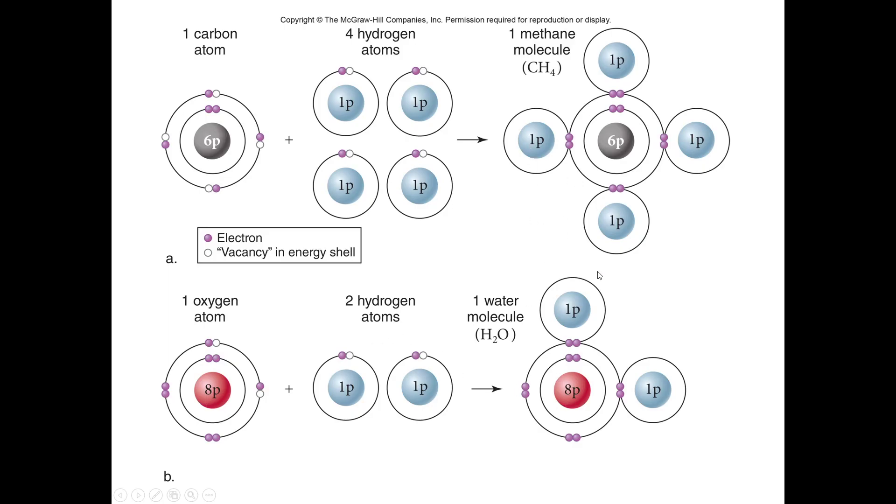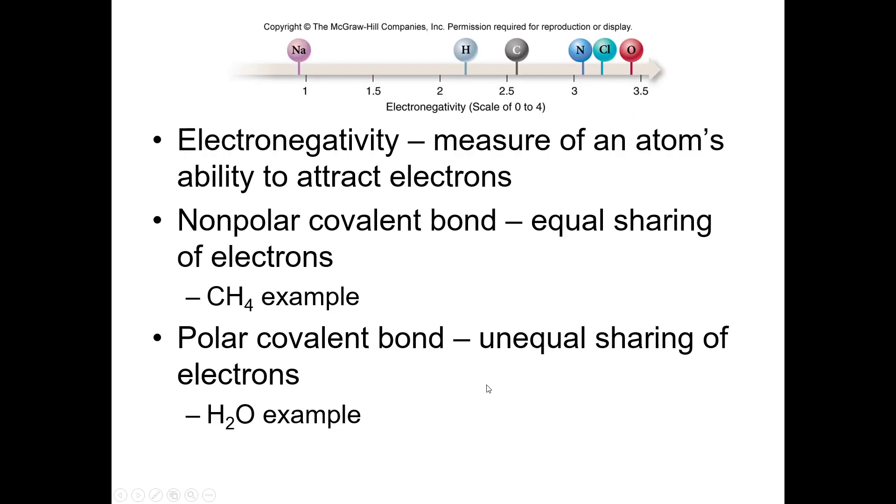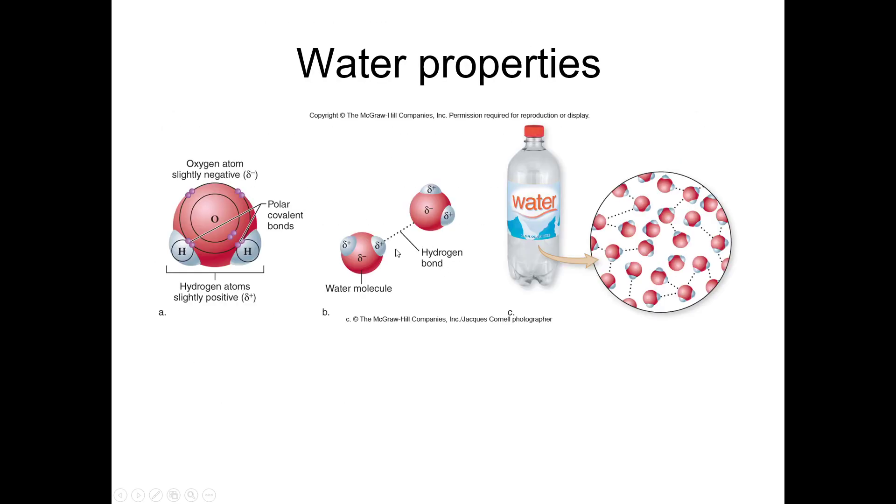You will have to distinguish between polar covalent bonds and just covalent bonds, or what we call non-polar covalent bonds, but sometimes we just say covalent bonds. For example, water is a polar covalent bond because the electrons have a stronger affinity for oxygen than they do for hydrogen, and so it creates a polarity on the molecule. And as we discussed, that polarity ultimately is what results in the hydrogen bond.